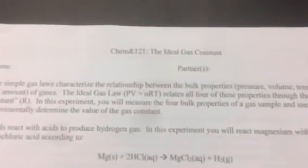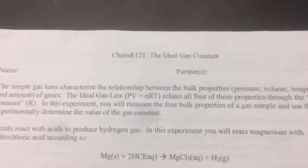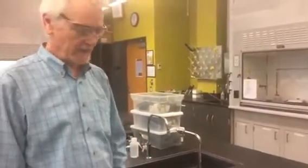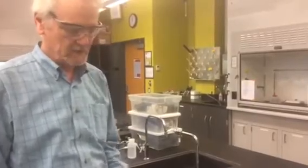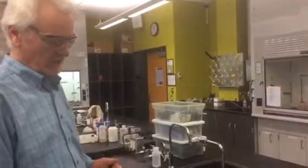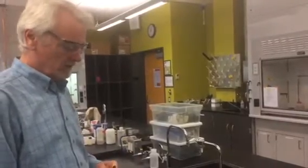This week's lab is called the ideal gas constant, and not surprisingly we're going to be working with the ideal gas law. You remember that there are four bulk properties of gases: pressure, volume, temperature, and amount. If we measure all four of them in this lab, we can actually come up with an experimental value for the gas constant R, and then we can use that to see how well our experiment worked.